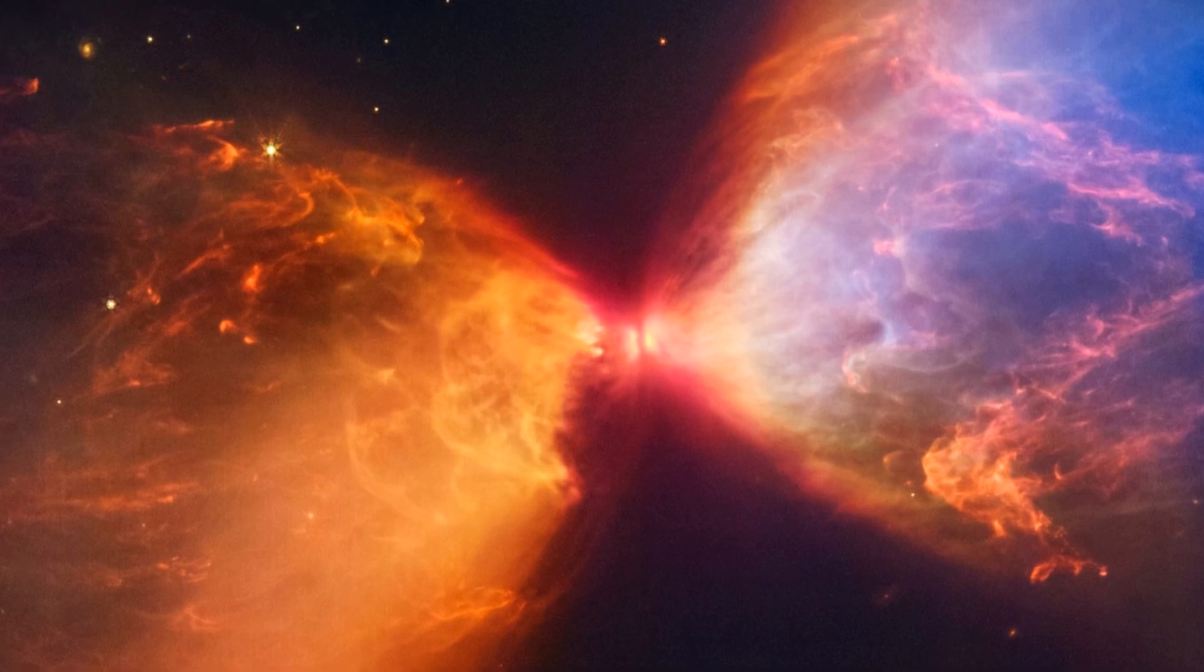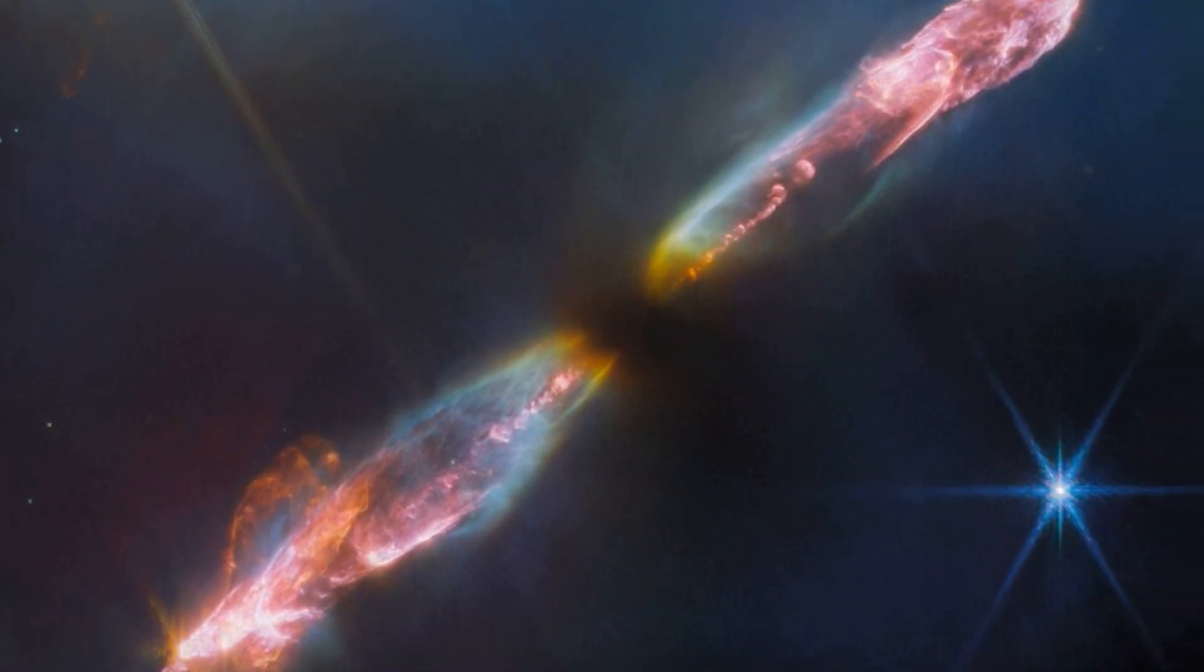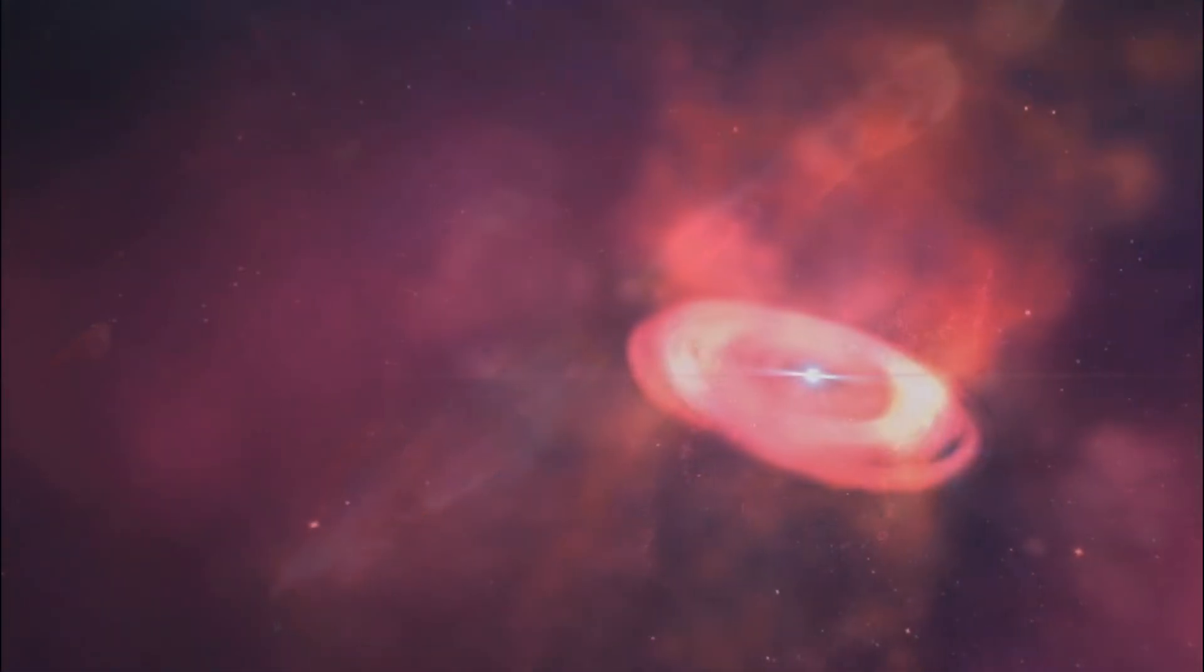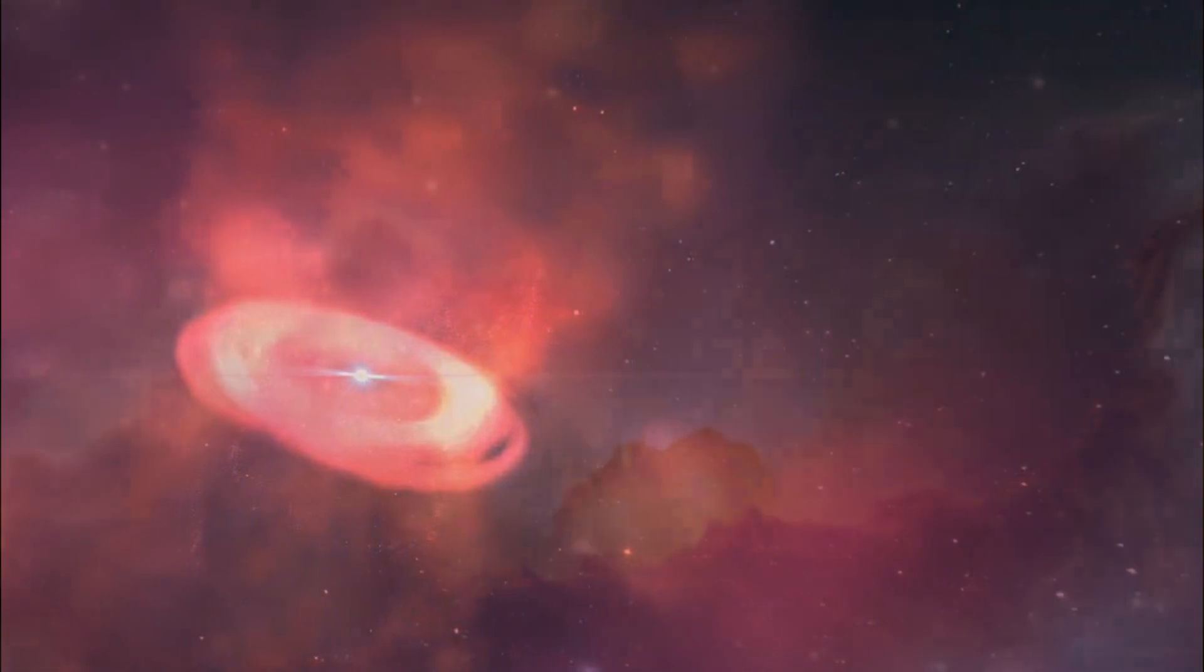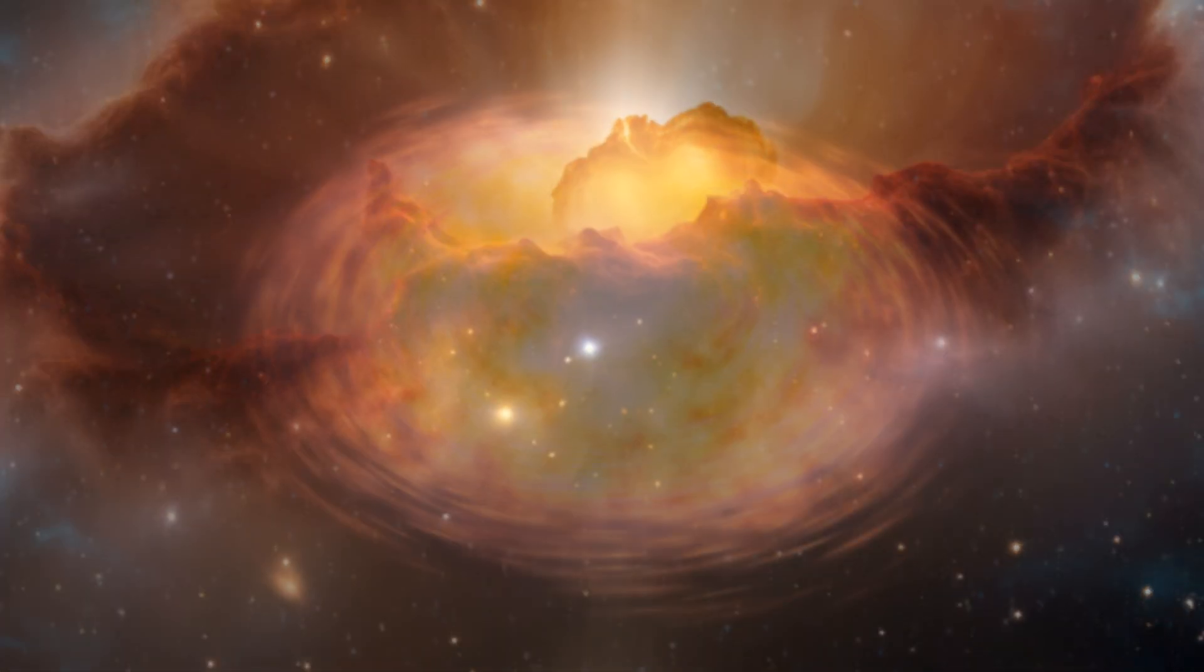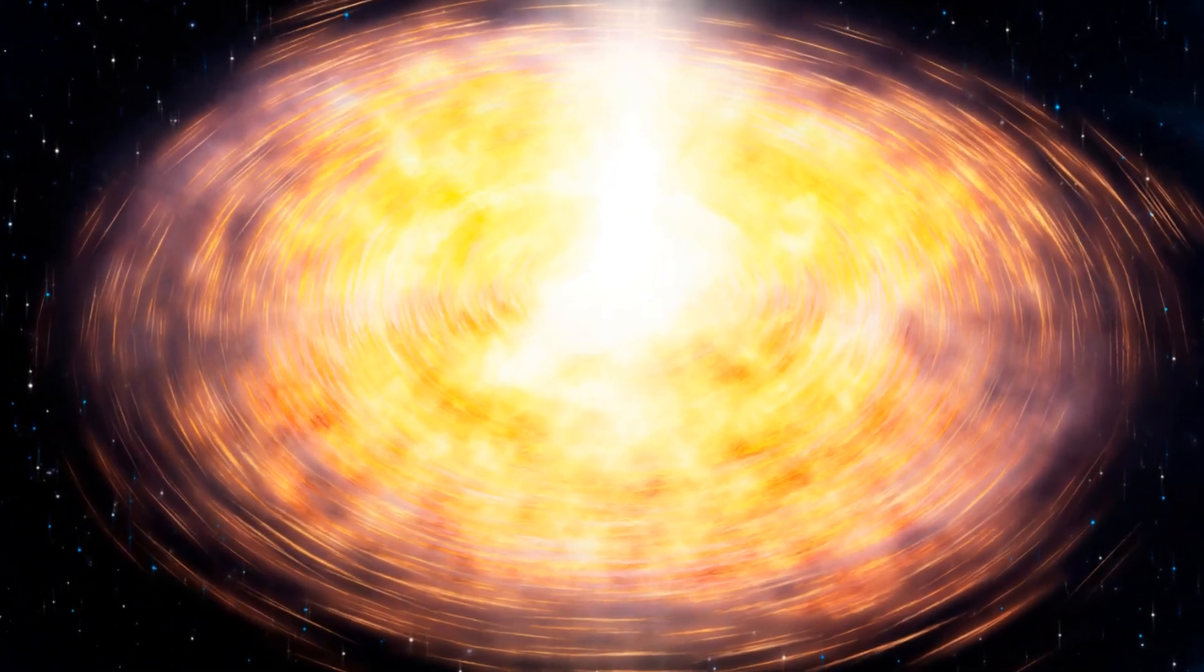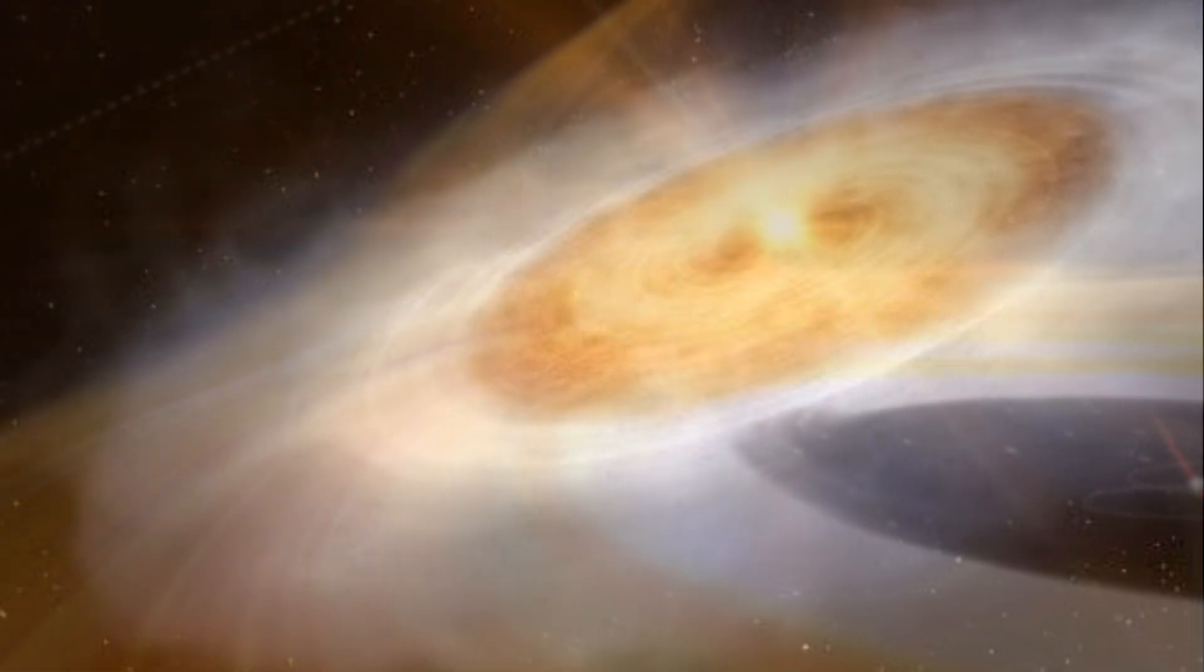As the cloud collapses, it forms a hot, dense core called a protostar. During this phase, the protostar continues to accumulate material from the surrounding cloud, increasing its mass and temperature. Protostars are often surrounded by disks of gas and dust, which can eventually form planets.